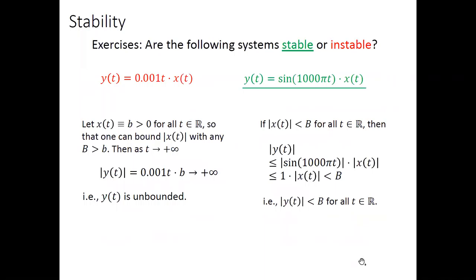Let's look at the last two examples associated with continuous time stability. For the first one, we can again find a counter example. Using x(t) = constant b (bounded), the output y(t) becomes 0.001·t·b. Although the coefficient 0.001 is very small, the factor t goes to positive infinity, making y(t) unbounded. Therefore this system is unstable.